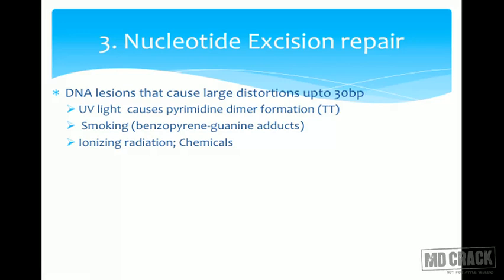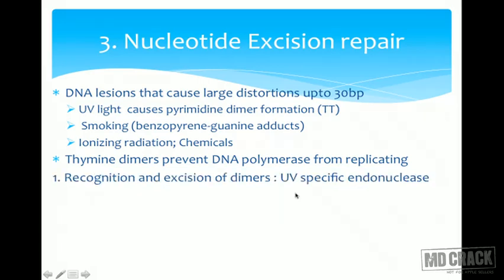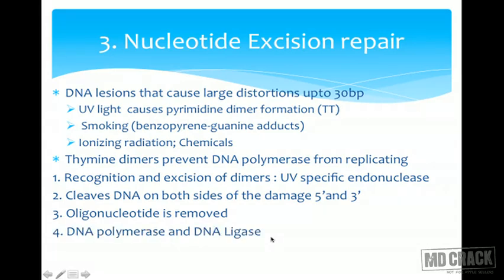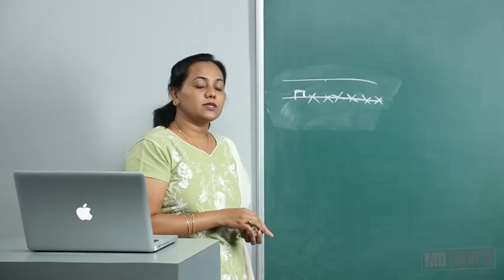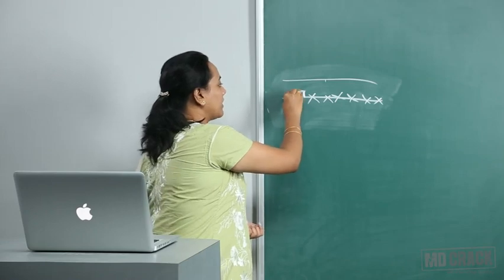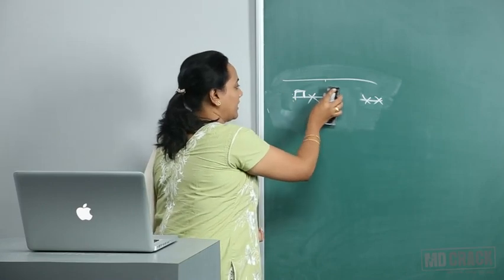Benzopyrene-guanine adducts from smoking or thymine (TT) dimers from UV light prevent DNA polymerase from replicating. In NER, the first step is recognition and excision of the dimers by a UV-specific endonuclease. This cleaves the DNA on both sides of the damage — both 5' and 3' — and an oligonucleotide is removed. Then DNA polymerase and ligase fill and seal. The key difference from BER is that here there are two cuts, not one.